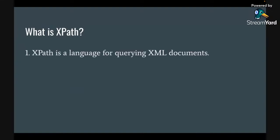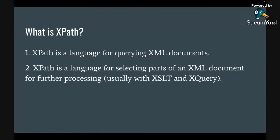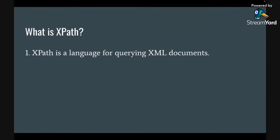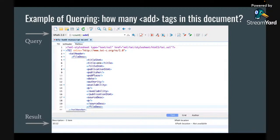Back to the original question: what is XPath exactly? For us, it's two things. One, it's a language for querying XML documents. The second is that it's a language for selecting parts of an XML document for further processing, usually with XSLT but also with XQuery. Here's an example of a standard XPath query in the Oxygen XML editor, pointing to XPath 2.0. What I'm querying is a count function — how many ad tags are there in this XML document? And at the bottom you can see the result: 3,512.